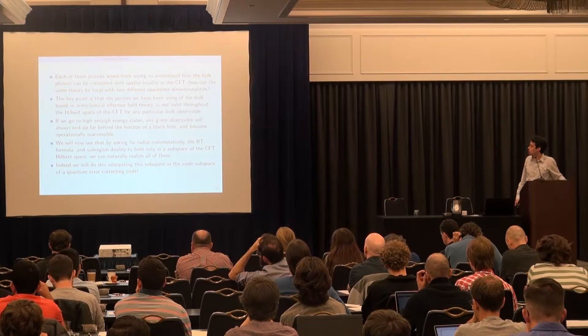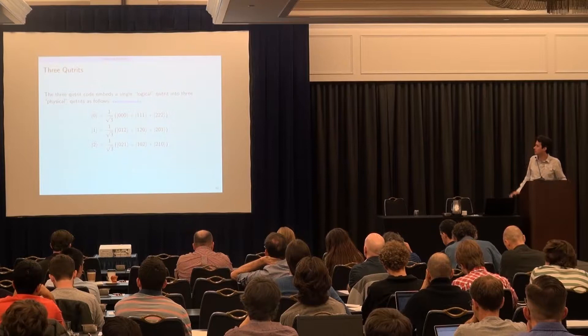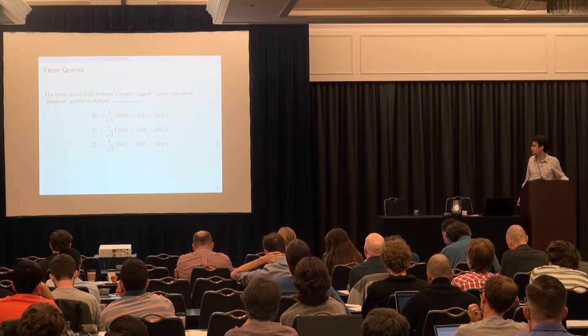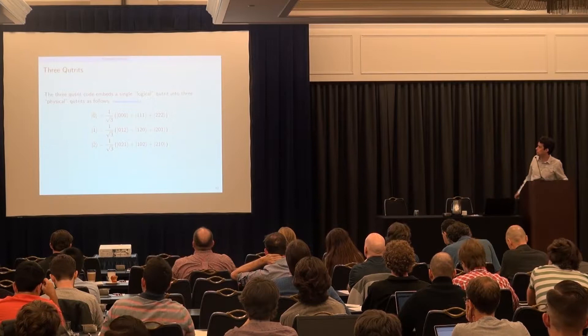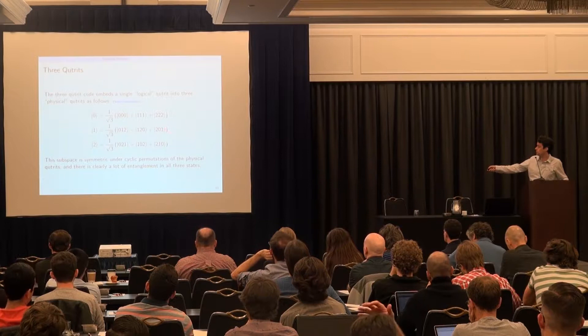It's helpful to first have a simple model in mind. I'll take the three-qutrit code and reinterpret it as the simplest example of holography. The three-qutrit code embeds one logical qutrit into three physical qutrits. This subspace is symmetric under cyclic permutations of the physical qutrits and all the states are entangled.